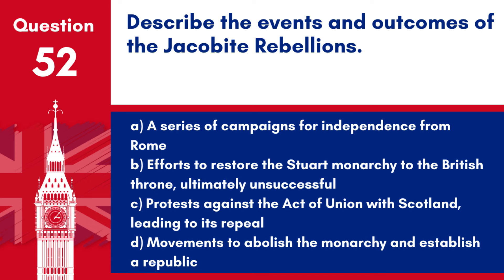Question 52. Describe the events and outcomes of the Jacobite Rebellions. a. A series of campaigns for independence from Rome. b. Efforts to restore the Stuart monarchy to the British throne, ultimately unsuccessful. c. Protests against the act of union with Scotland, leading to its repeal. d. Movements to abolish the monarchy and establish a republic. Answer: b. The Jacobite Rebellions were attempts by supporters of the exiled Stuart kings to restore them to the throne of Britain, ultimately failing and ending with significant battles like Culloden in 1746.